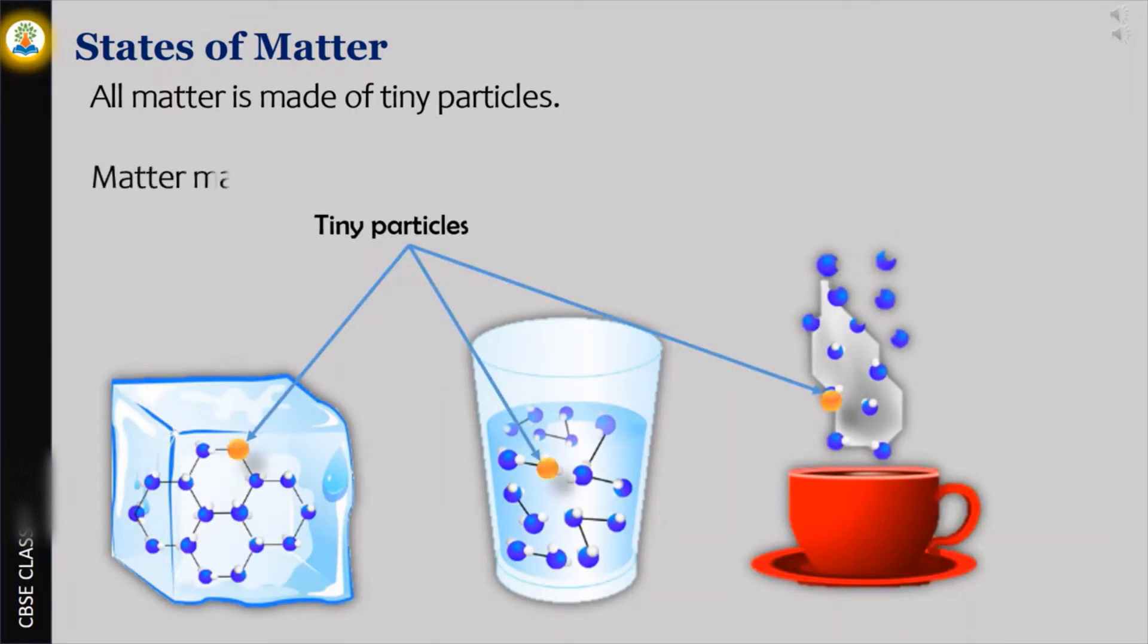Matter mainly exists in the form of solid, liquid and gas. An example is ice, water and vapors which indicate all the above states.